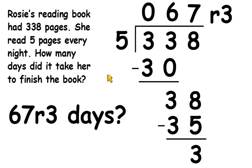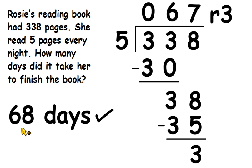So actually, she would have finished her book on the 68th day when she read. She didn't need to read 5 pages, she just needed to read the last 3 pages of her book. So the answer to this question requires rounding up and gives us 68 days it would have taken Rosie to finish her book.